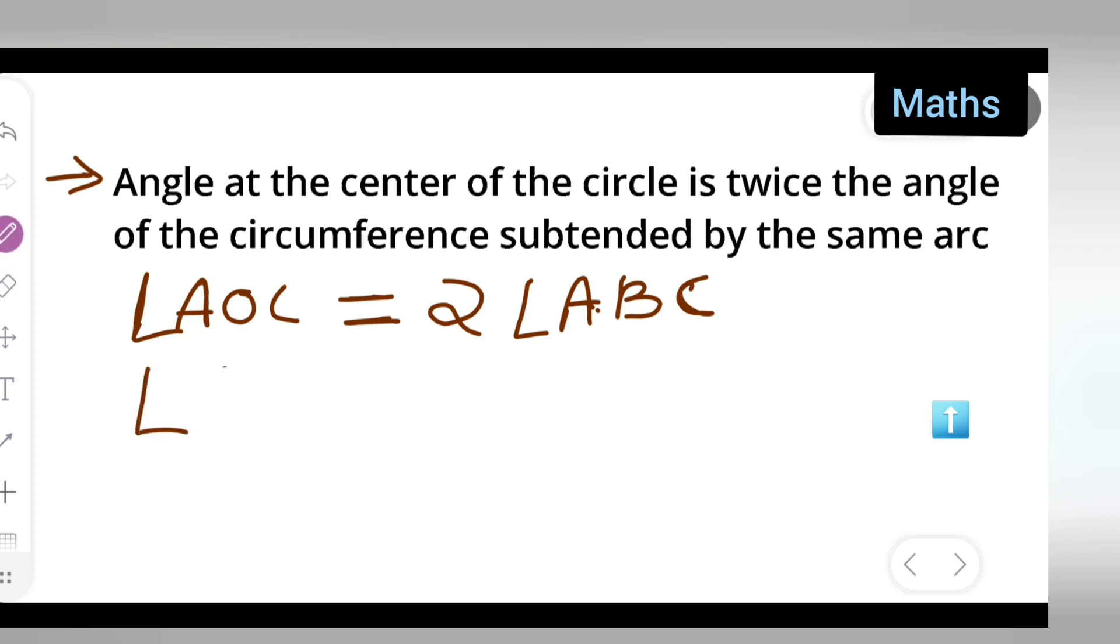What is angle ABC given to be? Angle ABC is equal to 20 degrees. And this is nothing but given to you, already given right here.